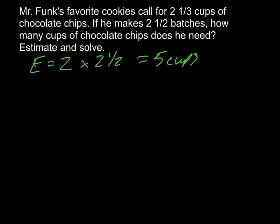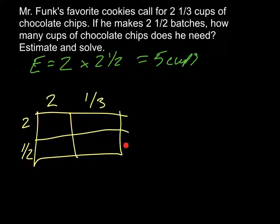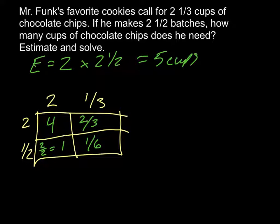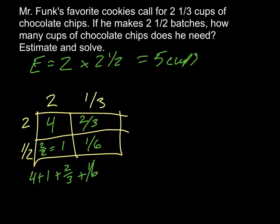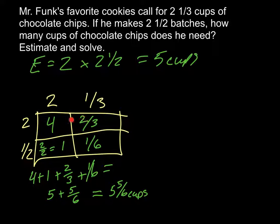There are multiple ways to solve this for a precise, exact solution — not estimating — and I'm going to show you two strategies. The first is to use the generic rectangle. I drew a quick rectangle sketch, labeled one side 2 and one-third and the other side 2 and one-half, then multiplied and filled in each section. After filling in each section, I added all the parts, making sure to find a common denominator for fractions like two-thirds and one-sixth. Working through the addition gave me 5 and five-sixths cups — which is in the same ballpark as my estimate.